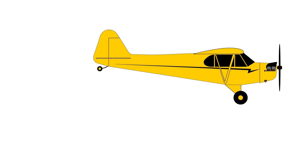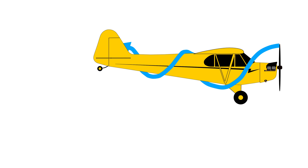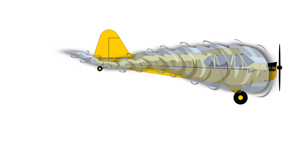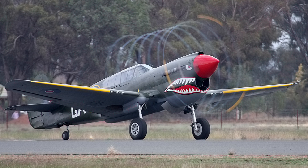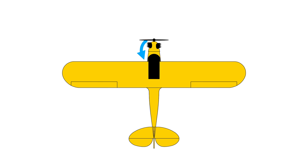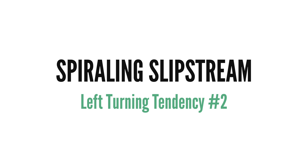The second effect of a spinning propeller is called spiraling slipstream. As a propeller spins, it doesn't push air back in a straight line but swirls it — you can think of it as a mini horizontal tornado. The air swirls around the fuselage in the same direction as the propeller, which is visually apparent when propeller tip vortices form. As the swirling air moves further backwards around the fuselage, it impacts the vertical stabilizer on the left side, pushing the tail to the right and yawing the nose to the left. This is the second of the four left-turning tendencies.